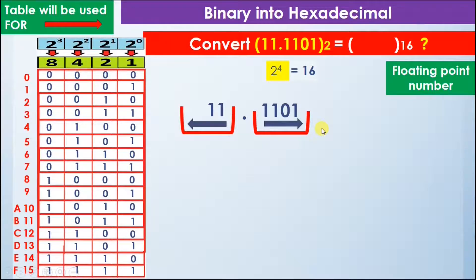This group is complete because it has four bits, but if you look at this group, it is incomplete. It has two bits and we need two more bits, so we add two more zeros to it to make it complete. Now both groups are complete.